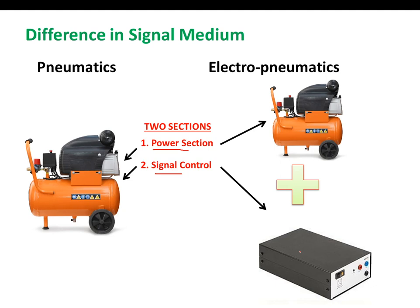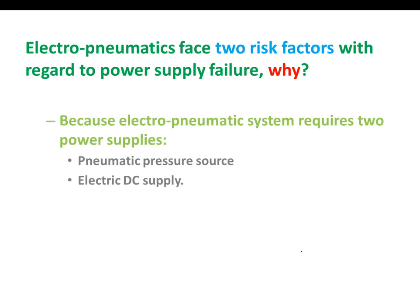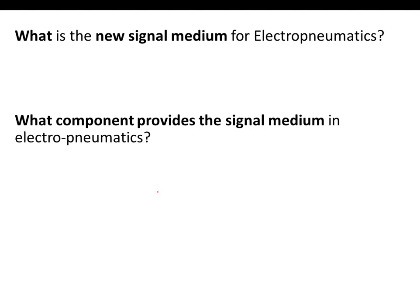Electro-pneumatics faces two risk factors with regard to power supply failure. We now have two power supplies: pneumatic pressure represented by the compressor, and the electric DC supply. So we have one risk factor from pneumatic pressure failure, and the second risk factor is in the case of failure of the DC power supply. The new signal medium in electro-pneumatics is electric current, and the DC power supply provides that signal.